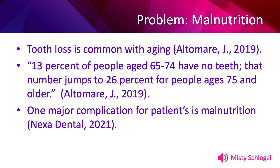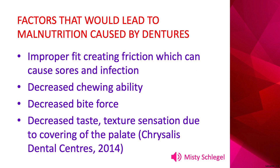Proper use of dentures in the older adult can improve their general oral health, their facial appearance, their ability to speak and chew, and enhance their quality of life and confidence. Although dentures can help improve certain physical, physiological, and psychological factors, their use can have many drawbacks for the older adult. One major complication for patients is malnutrition. According to Merriam-Webster 2021, malnutrition is defined as 'faulty nutrition due to inadequate or unbalanced intake of nutrients or their impaired assimilation or utilization.' Many complications related to denture use influence the likelihood of malnutrition in older adults, such as an improper fit creating friction which can cause sores in the mouth and infection.